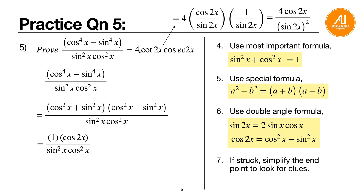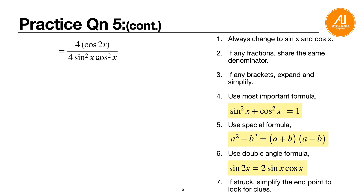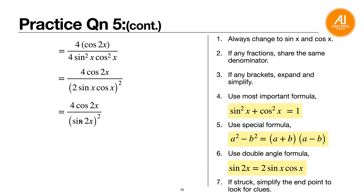Now the expression is cosine 2x over sine squared x cosine squared x. Look at the endpoint: 4 cotangent 2x cosecant 2x equals 4 cosine 2x over sine squared 2x. Since sine 2x equals 2 sine x cosine x, sine squared 2x equals 4 sine squared x cosine squared x, which matches the denominator. Transform top and bottom: rewrite the denominator as (2 sine x cosine x) squared, i.e., sine squared 2x. Split the fraction into (cosine 2x over sine 2x) times (1 over sine 2x), giving 4 cotangent 2x cosecant 2x.